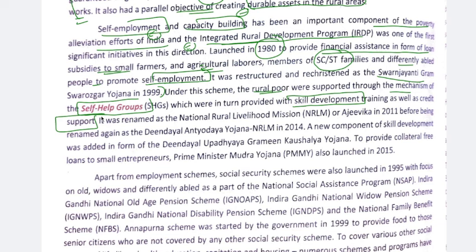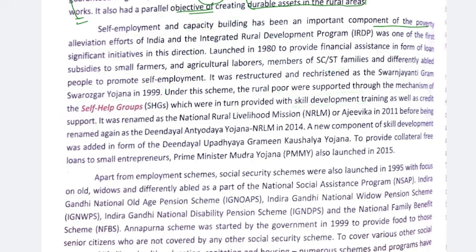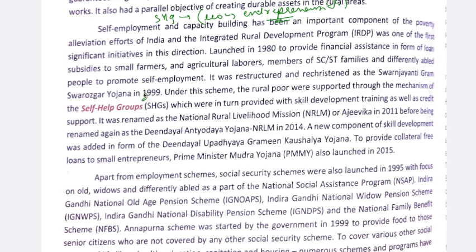Self-help groups (SHGs) are small voluntary groups of 5 to 15 people from similar life situations — often women — who pool their resources and engage in economic and entrepreneurial activities. Under the Swarna Jayanti scheme, SHGs were used as a mechanism for skill development training and credit support for beneficiaries. This scheme was later renamed the National Rural Livelihood Mission (NRLM) and Aajeevika in 2011.